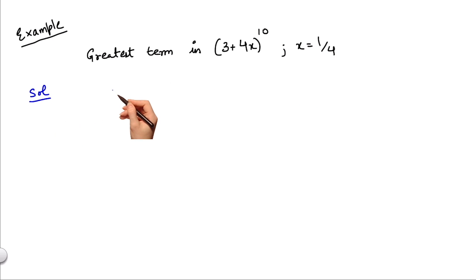Let's solve this. Remember, the formula that we just learned for finding out m applies only to series of the form (1+x)^n. So we would need to convert (3+4x)^10 in terms of (1+x)^n.